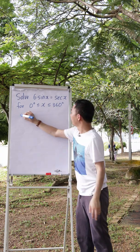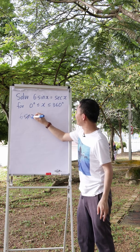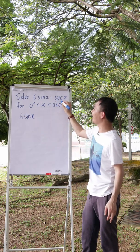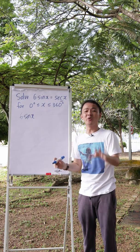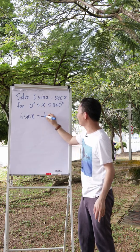So what you need to do is you can change the secant x. You see the third letter, one, two, three, the third letter is C. It means 1 over cos x. So I will change this one into 1 over cos x.